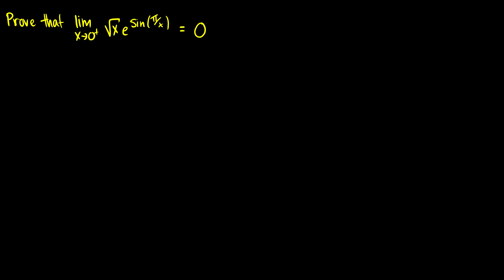In this video we're going to do two questions on the squeeze theorem. For the first question we want to prove that the limit as x approaches zero from the right of the square root of x times e to the sine of pi over x is equal to zero. With the squeeze theorem, we take an upper bound f(x) and a lower bound g(x), then squeeze the function at zero, showing that the upper and lower bounds both equal zero, therefore this function must equal zero.